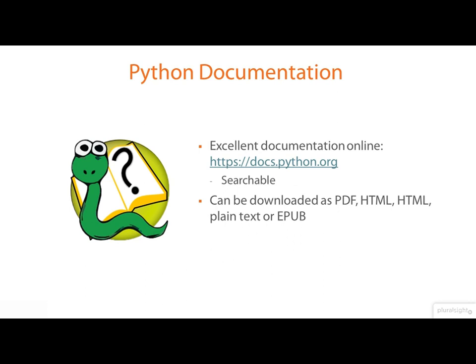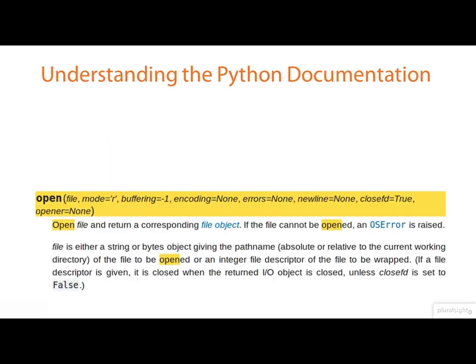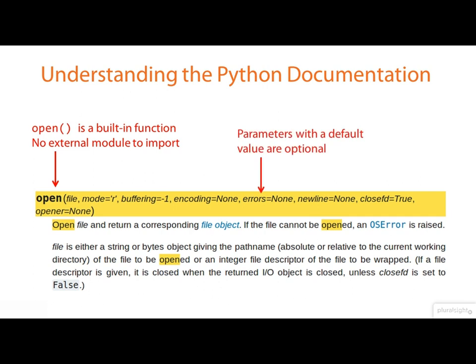There's excellent documentation for Python at docs.python.org. It has a searchable index and you can download it in a variety of formats if you want a local copy or even a printed version. Again, it's important to understand that what the Python documentation is showing you is not an example of a call to the function. Many of Python's functions are in external modules that need an import statement, but this one is a built-in function — you don't need to import anything. Also notice that Python, unlike C, supports function calls with optional arguments. In this example, all the parameters after the first one have a default value assigned and are therefore optional.